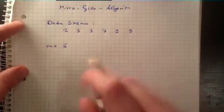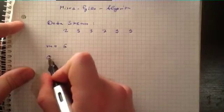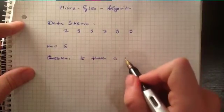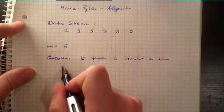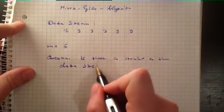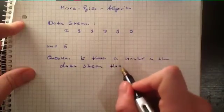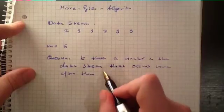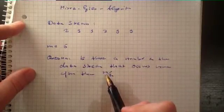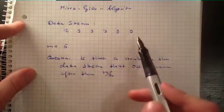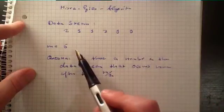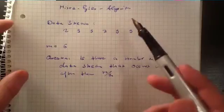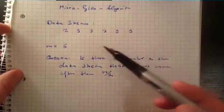The Misra-Gries algorithm will answer the question: is there a number in the data stream that occurs more often than M divided by 2? So in this case, is there any number in this data stream that appears more than 3 times? We already see there is a 9 here that appears 4 times, which is bigger than 3. So the output of this algorithm should be yes, there is a number, and the number is 9.